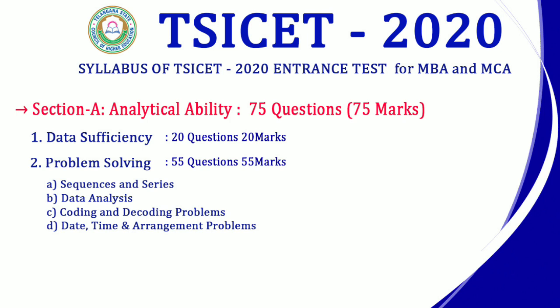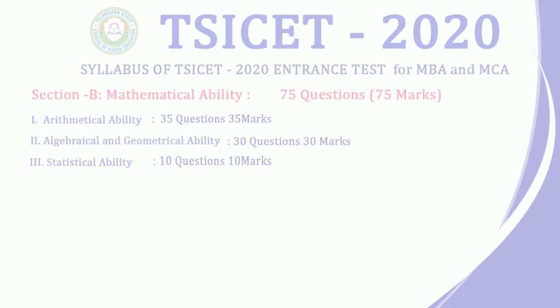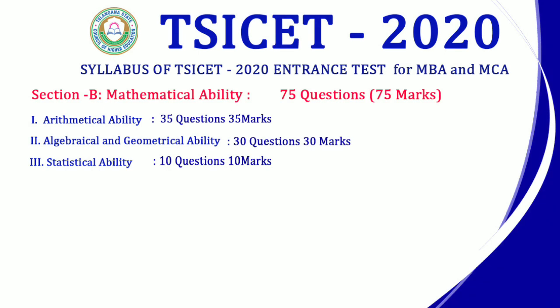These are maximum easy scoring topics. Problem solving is 55 marks — a very important and well-prepared scoring topic. Next, Section B: Mathematical Ability — 75 questions, 75 marks. Mathematical ability includes algebraic and geometrical ability, and statistical ability.